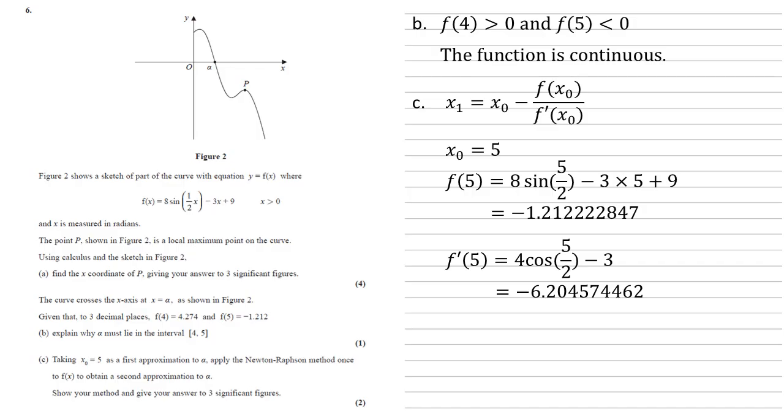So we can now put these three values into our equation. So x1 is going to be equal to 5 minus minus 1.21, and so on, over minus 6.20. Putting this into the calculator gives us an answer of 4.80 to three significant figures.